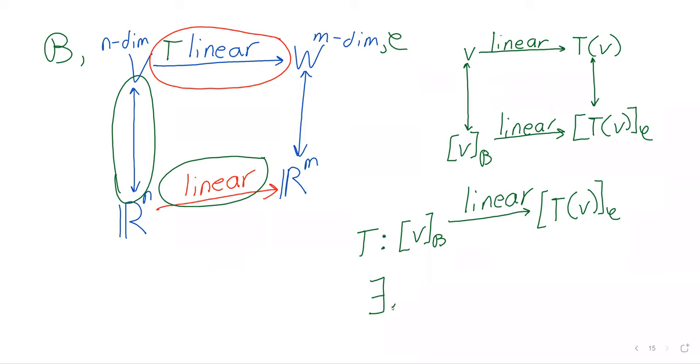But if this transformation is linear, there should exist an M, a matrix M, such that T of X is M times X.